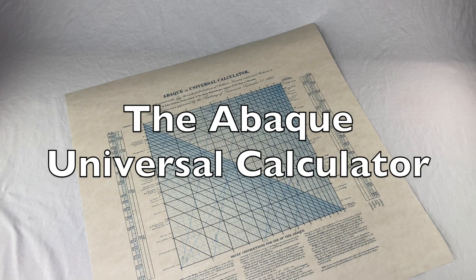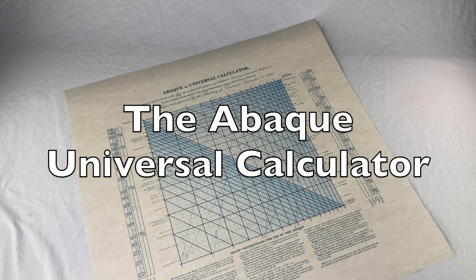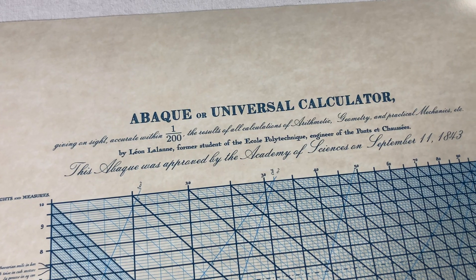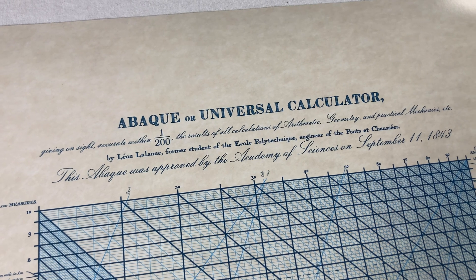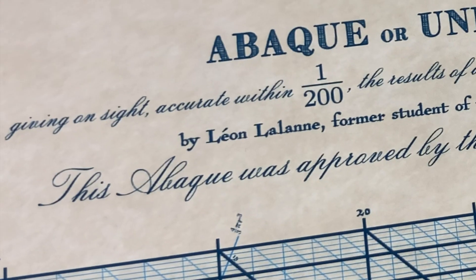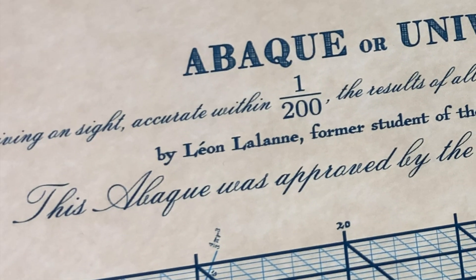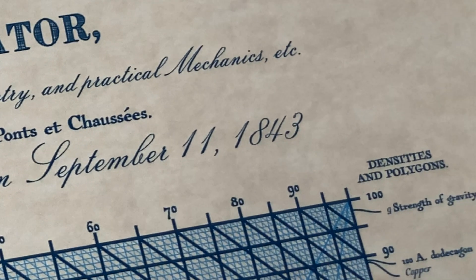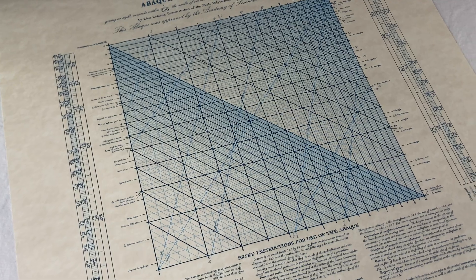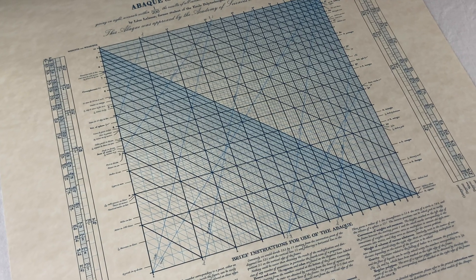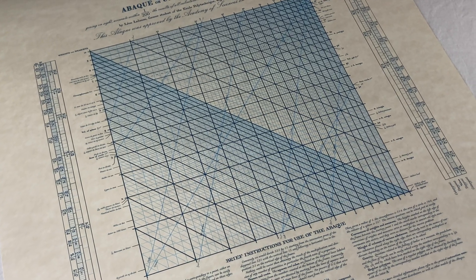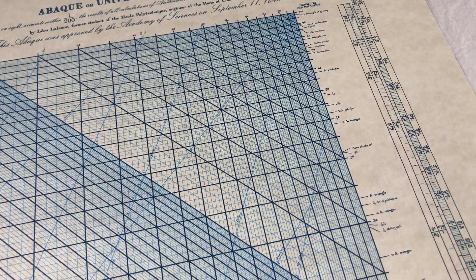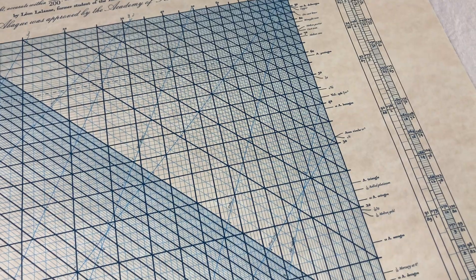This is the ABAC, or Universal Calculator, published by Léon Lalanne in 1843. It's a big nomogram, a graphical calculator that can be used to do all kinds of simple computations.